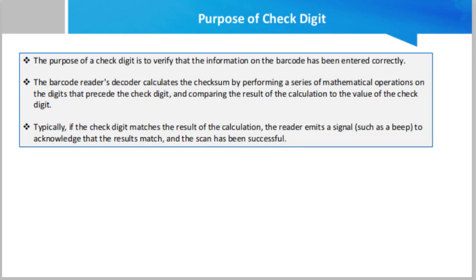What is the purpose of the check digit? The check digit, also known as a checksum character, is the number located on the far right side of a barcode. Normally, the purpose of a check digit is to verify that the information on the code has been entered correctly. The code reader's decoder calculates the checksum by performing a series of mathematical operations on the digits that precede the check digit and comparing the result to the value of the check digit. Typically, if the check digit matches the result of the calculation, the reader emits a signal such as a beep to acknowledge that the results match and the scan has been successful.